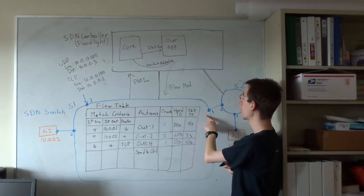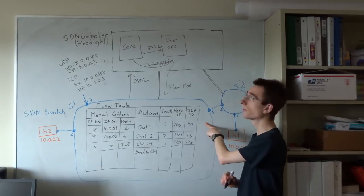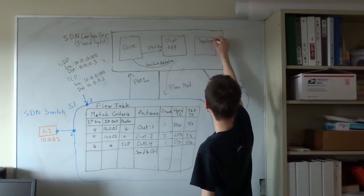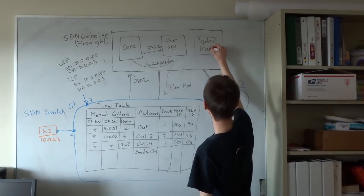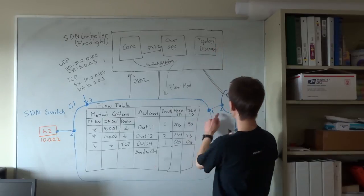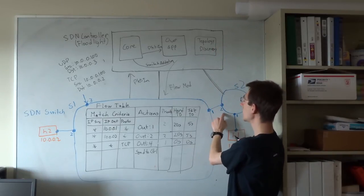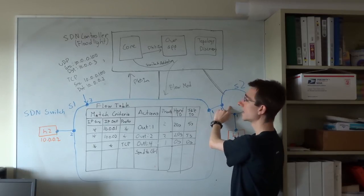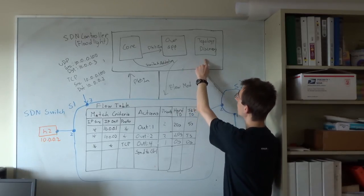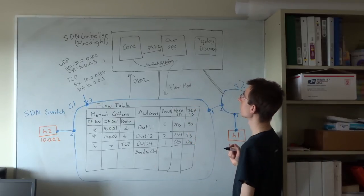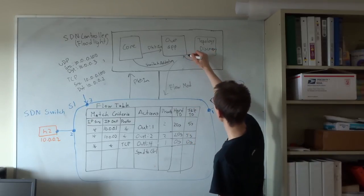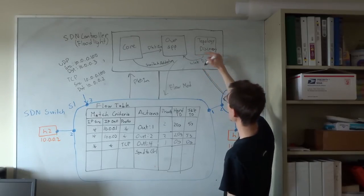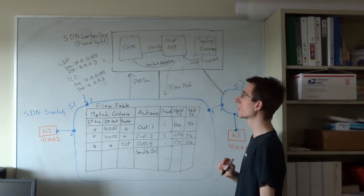The last type of event we'll talk about is a link discovery event. Floodlight has a module called topology discovery. The topology discovery module relies on special control packets being exchanged between SDN switches. When a switch receives one of these packets from another switch over a link, it notifies the topology discovery module. The topology discovery module will then generate a link discovery event and send this event to any applications that are interested.